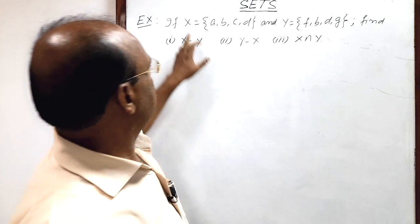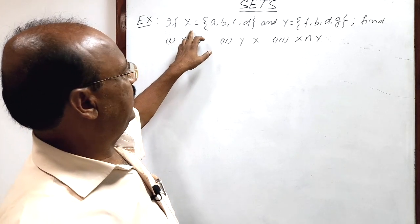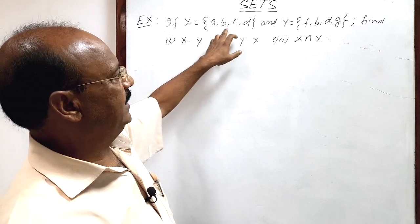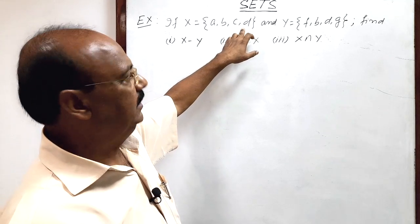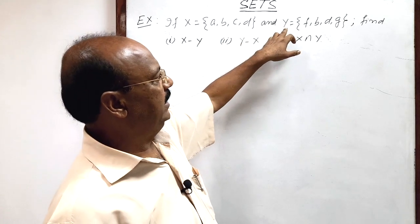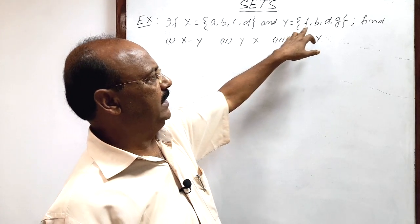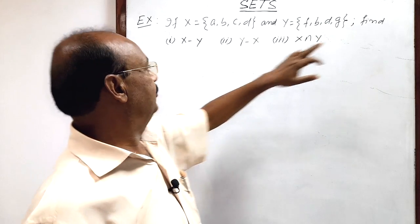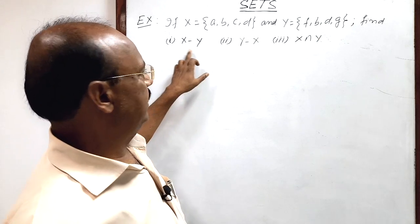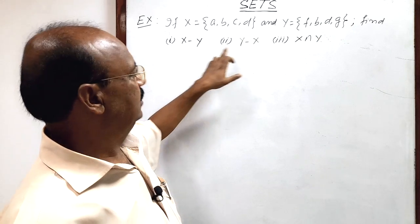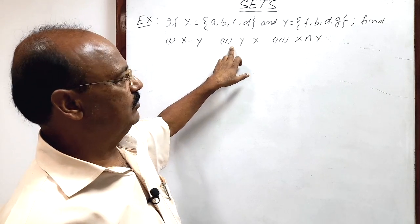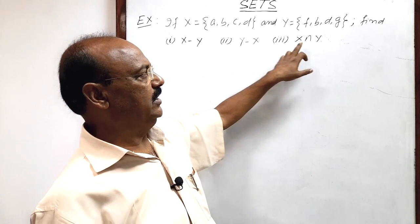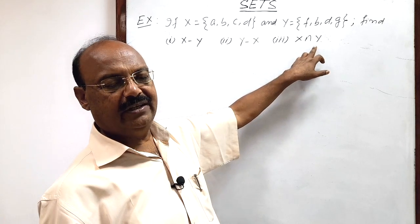The question is: if set X has elements a, b, c, d and set Y has elements f, b, d, g, then we have to find first X minus Y, second Y minus X, and third X intersection Y.